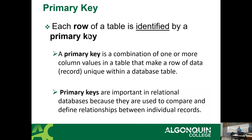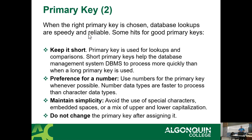A primary key is a combination of one or more columns that you need to identify a row. Primary keys are important because you use them to define relationships between different tables. When a primary key is chosen correctly, database lookups tend to be very reliable and fast. Here are some hints for good primary keys: keep it short. Primary keys are used for finding records and matching data from multiple tables. Short primary keys help the database process things more quickly.